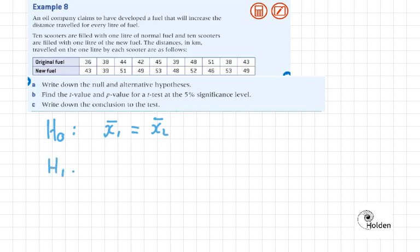H1 is that there is a difference, but it states here that it will increase the distance travelled. So X1 is less than X2. I know we talked about doing two tails, but this is actually a one-tailed test. But you don't need to worry about that, it's all in the hypothesis.